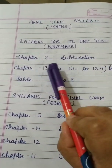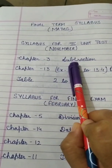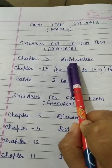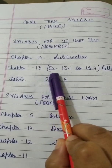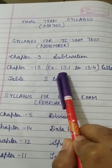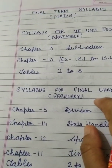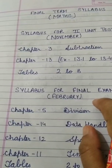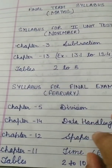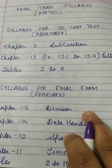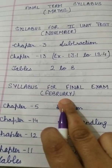First of all, the second unit test syllabus: it will have Chapter 3 — Subtraction, which we have already covered; Chapter 13, sections 13.1 to 13.4; and tables 2 to 8.